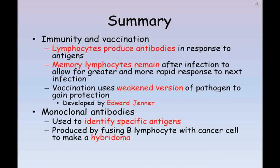In summary, the human immune system uses white blood cells called lymphocytes to produce antibodies in response to the antigens found on pathogens. After an initial exposure to an antigen, whether through an infection or a vaccination, the body produces memory lymphocytes that are able to produce antibodies quicker when the same antigen is detected again, acting as a protection to a secondary infection. Monoclonal antibodies are used to identify specific antigens. They are produced by fusing a B lymphocyte that's producing the antibody you want with a cancer cell to create a hybridoma. These are useful in identifying cancers and targeting treatment to those cells, and also in pregnancy tests.